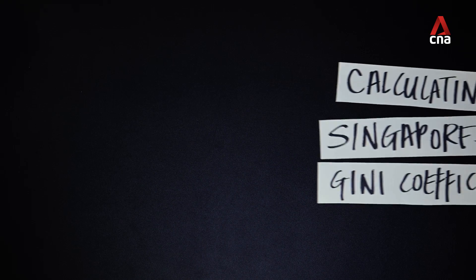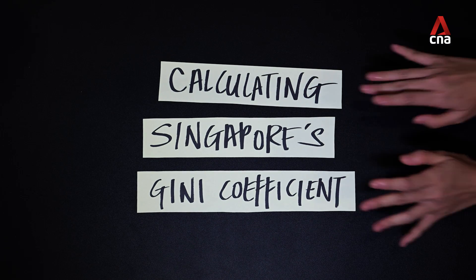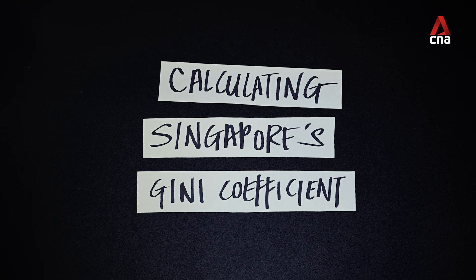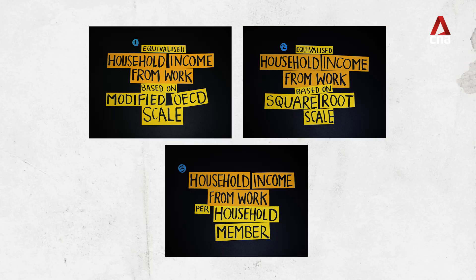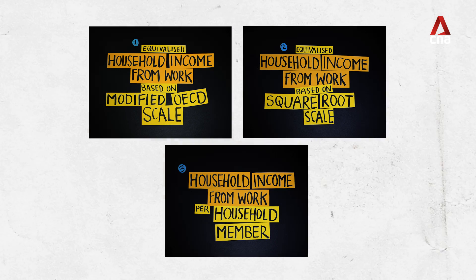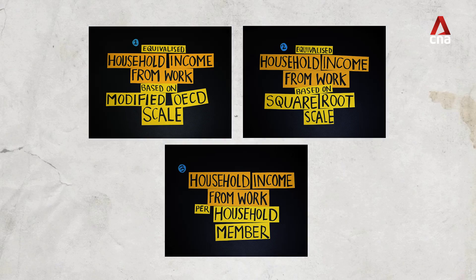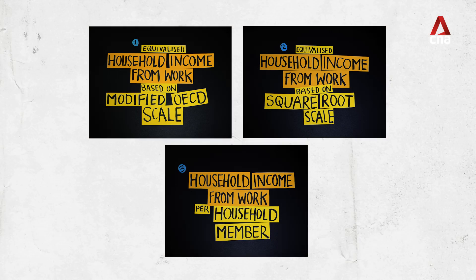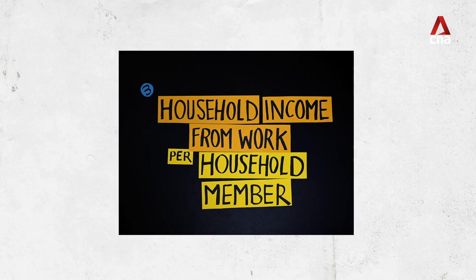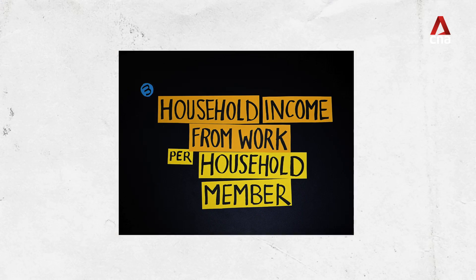Now that you know what the Gini coefficient is and why we need to care about it, the next thing I'll explain is what exactly goes into this figure. Our Gini coefficient is compiled based on three different scales. For this video, I'll only focus on the third one, as that's how our Gini coefficient is typically reported: household income from work per household member.